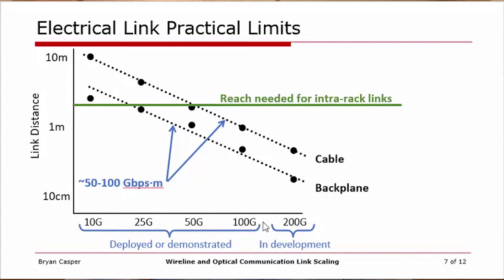What we've seen throughout the industry over the last few years includes data rates up to and slightly exceeding 100 gigabits per second being demonstrated. At this point, I believe in a few years' time going forward, we're going to see 200 gigabit per second electrical links demonstrated.